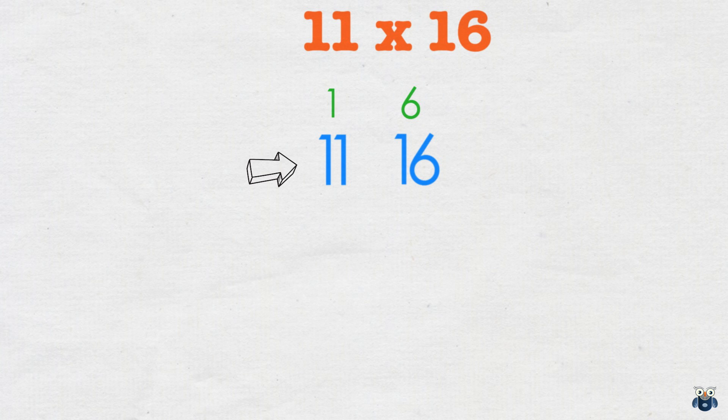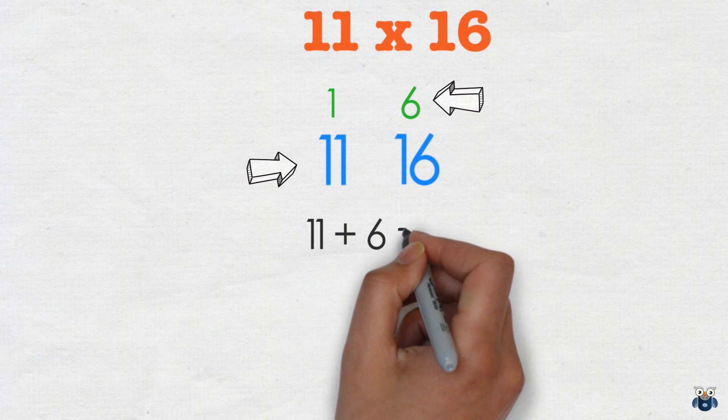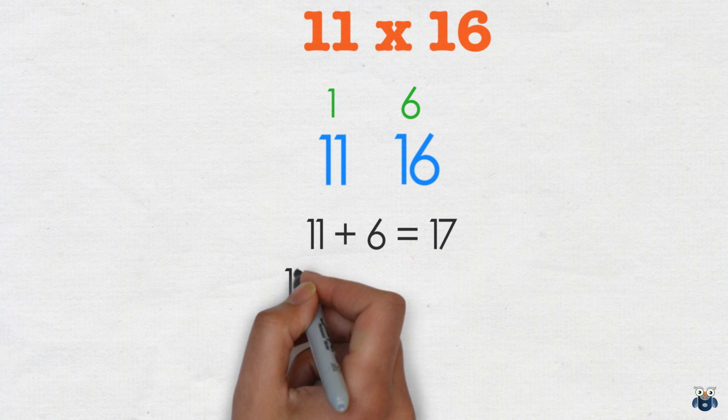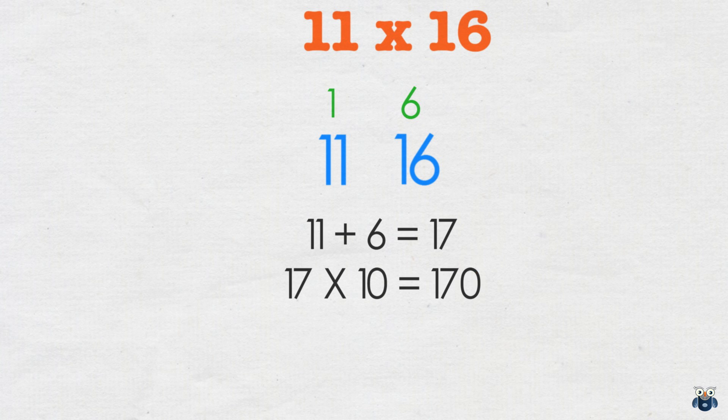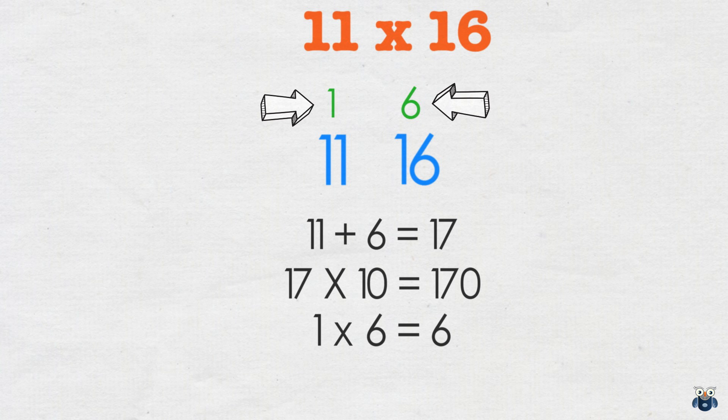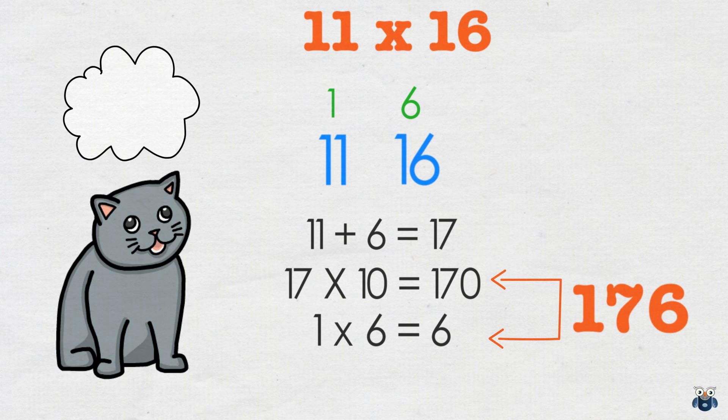Now we add the first number and the second deficit. 11 plus 6 is 17. And since the base is 10, we multiply our result with 10. 17 times 10 is 170. We then multiply the two deficits. 1 into 6 is 6. And finally, we add both results to give us 176, our final answer.